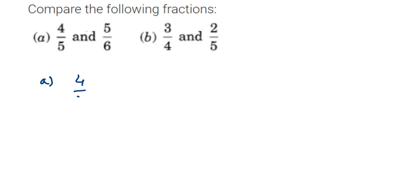And here we have 5/6. Now to check which fraction is greater or smaller, do one thing: just cross multiply. Cross multiply means you have to multiply 6 with 4 and multiply 5 with this 5.